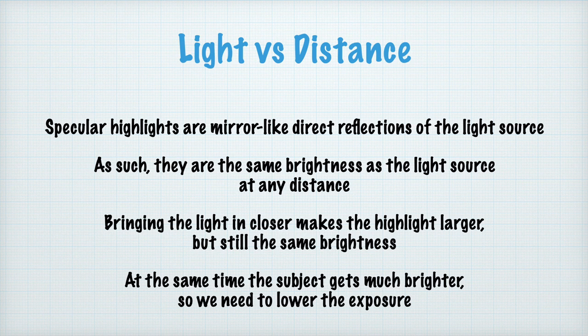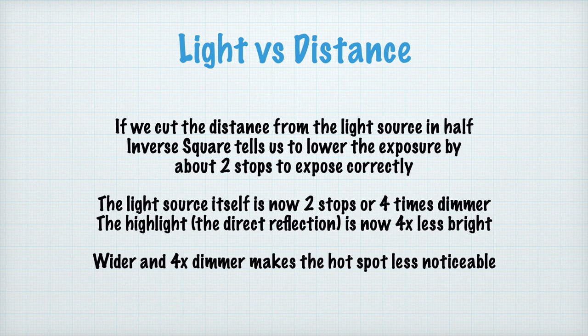At the same time, the subject gets much brighter, so we need to lower the exposure. If we cut the distance from the light source to the subject in half, inverse square tells us to lower the exposure by about two stops to expose correctly. The light source itself is now two stops, or four times dimmer. The highlight — the direct reflection — is also four times less bright. Wider and four times dimmer makes the hotspot much less noticeable.